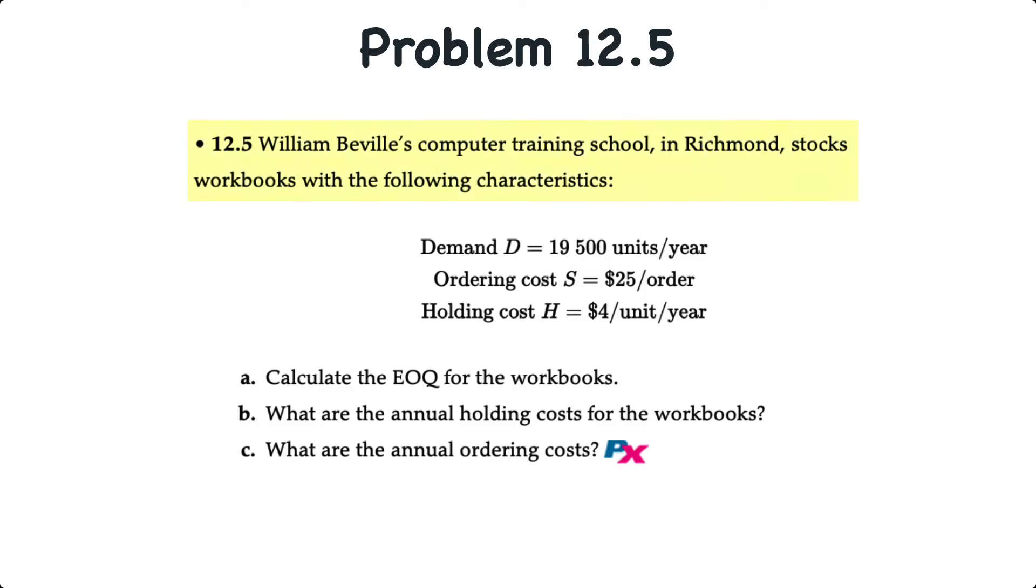In this problem, William Belfield's computer training school stocks workbooks with the following characteristics. Annual demand, or big D, is 19,500 units per year. The ordering cost, also known as S, is equal to $25 per order, and the holding cost, H, is $4 per unit per year.